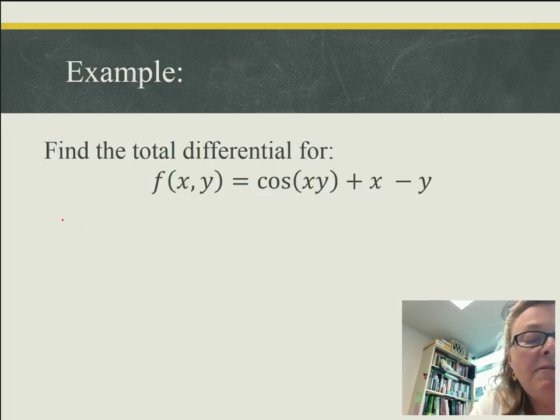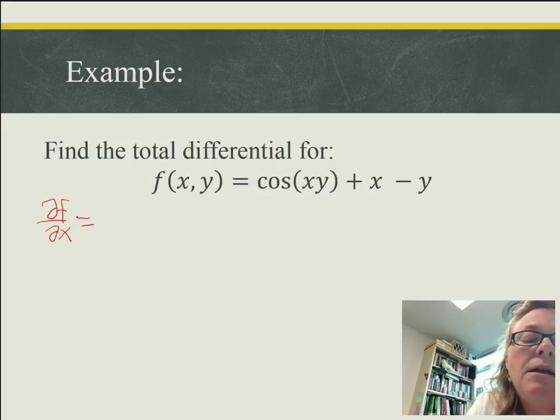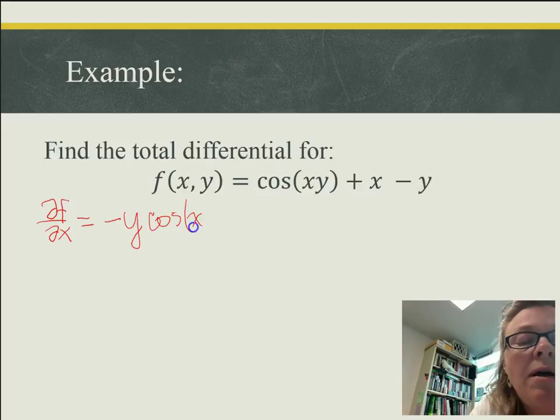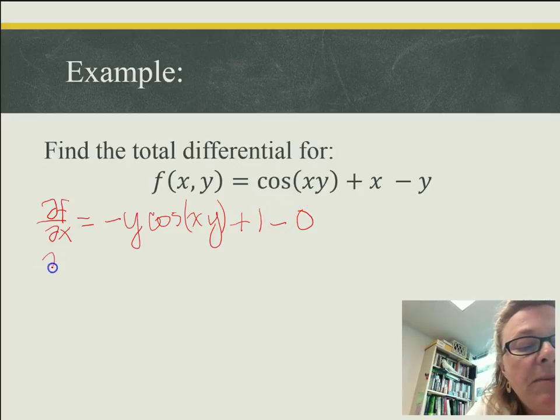So I'm going to go ahead and find the partial of f with respect to x. And when I look at the cosine function, the argument does have an x in it. So I will have to use the chain rule. And so derivative of cosine is sine. And the derivative inside that cosine with respect to x is going to give me a y. So I'm going to have negative y cosine of xy. That takes care of the cosine term. Doing a partial with respect to x, now I have this plus x term. So that's going to be a plus 1. And now I have this minus y term. That's going to be a minus 0.